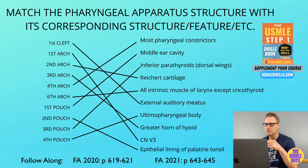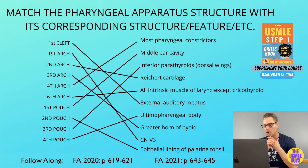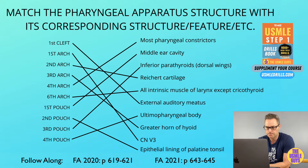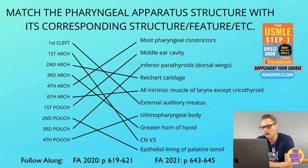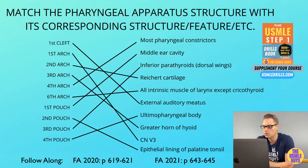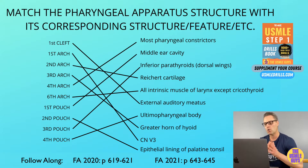Reichert's cartilage is the precursor to the styloid process, the stapes, the stylohyoid ligament, and the lesser horn and upper body of the hyoid bone. The associated nerve is cranial nerve VII, which innervates all muscular derivatives of the second arch, including muscles of facial expression, the stylohyoid, the stapedius, the platysma, and the posterior belly of digastric. The sensory field of the second arch via the facial nerve provides taste sensation to the anterior two-thirds of the tongue via the chorda tympani.